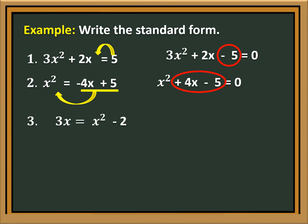3x equals x squared minus 2. Let us transpose 3x to the right side of the equation, so it will become negative 3x. Therefore, we will have 0 is equal to x squared minus 3x minus 2.